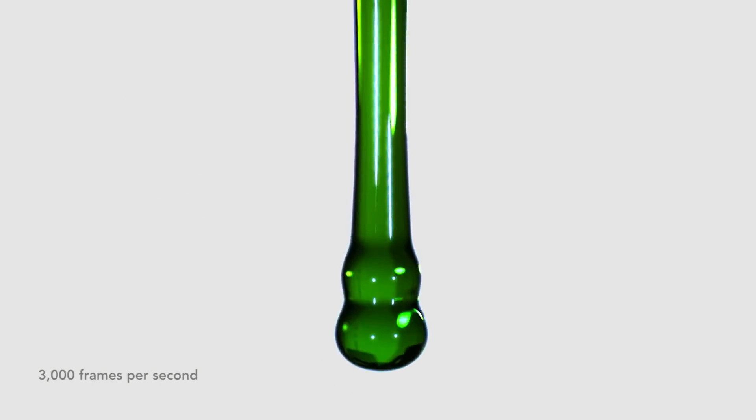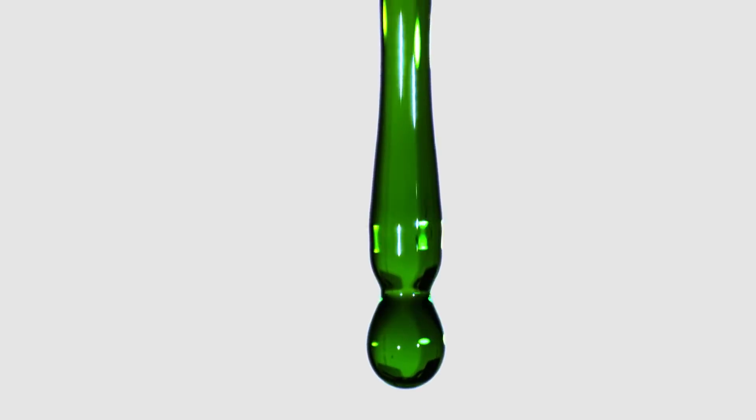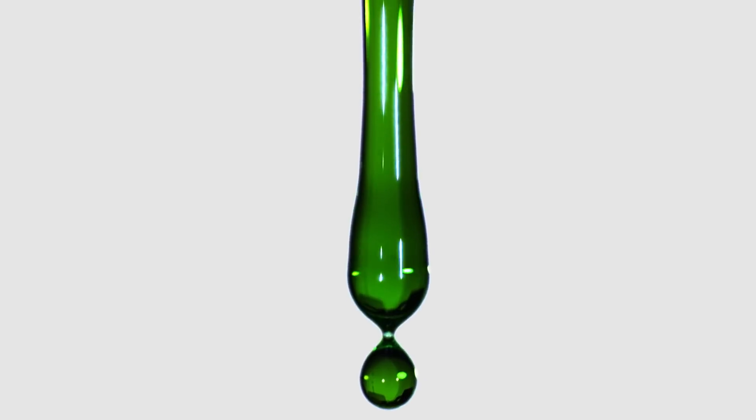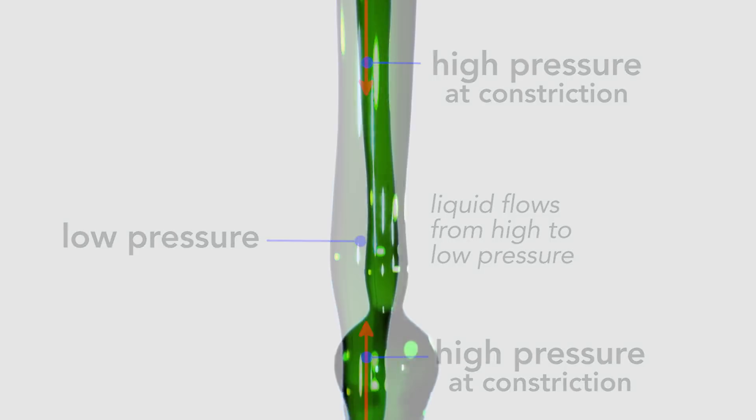So the flowing liquid keeps moving downward, pulled by gravity, until the minimization of surface area forces some liquid to move up by creating these bulges. Upward flow occurs because at the ends of the bulge, where the stream is constricted, the pressure is higher than in the middle, so liquid flows toward the middle.